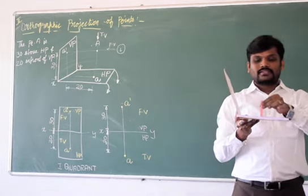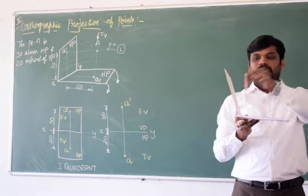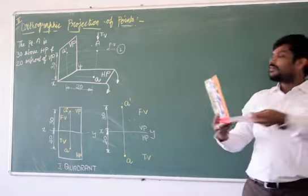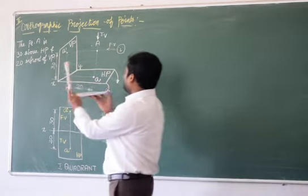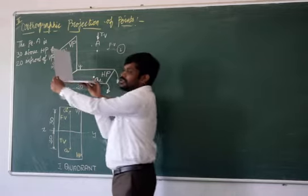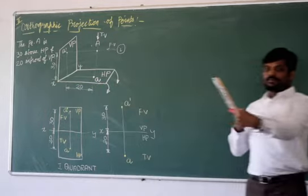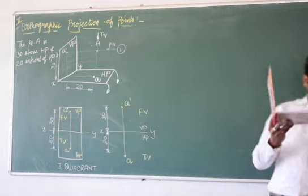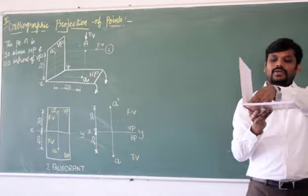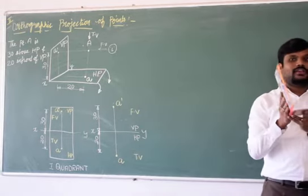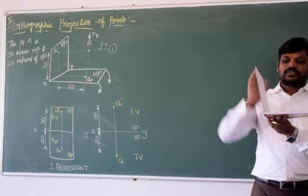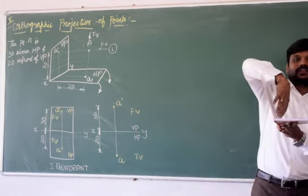The point A is 30 mm above HP and 20 mm above VP. Like similar to the case which I have plotted on the board, this is my quadrant position. For better understanding, I am explaining taking this book, placing it in first quadrant. Whenever a point or a line or a solid, in the coming units we are going to study, first we need to put it on a reference line.